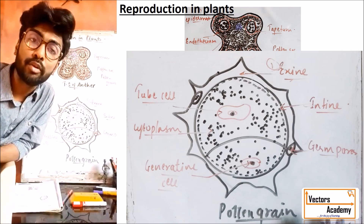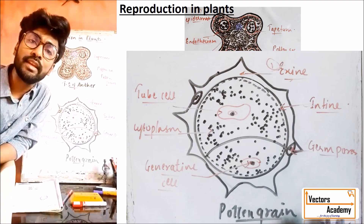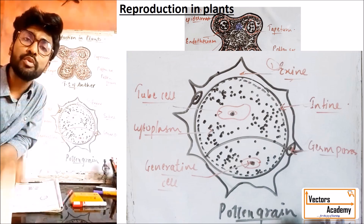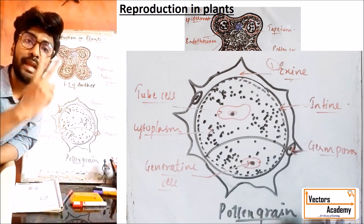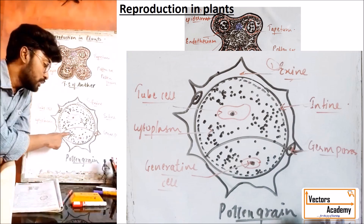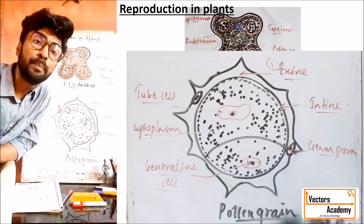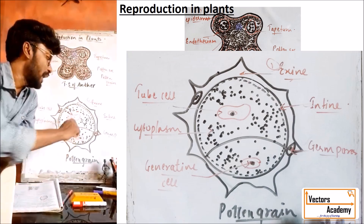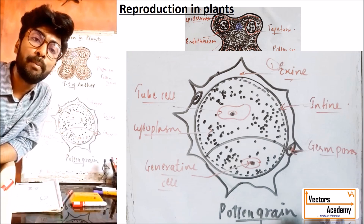Initially, the pollen grain is a unicellular and uninucleated structure. As it undergoes maturation, it generally forms a two-celled structure: one is called the smaller cell and the second is the larger cell. The smaller cell is the generative cell and the larger cell is the tube cell. The entire pollen grain is generally surrounded by cytoplasm.